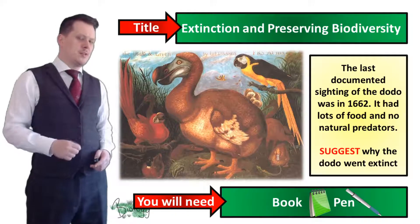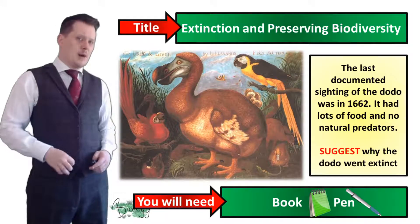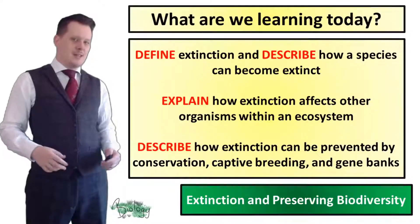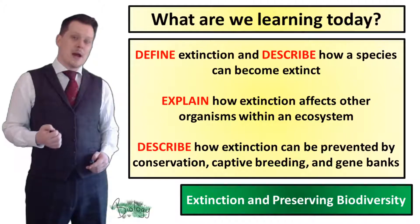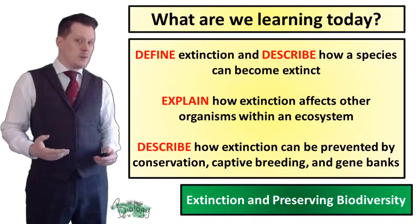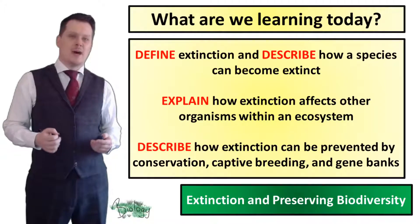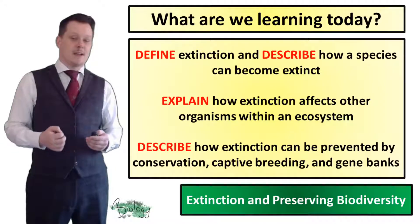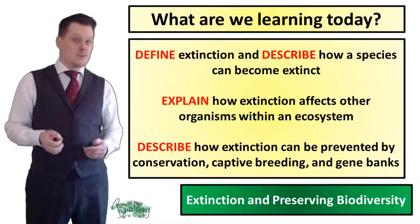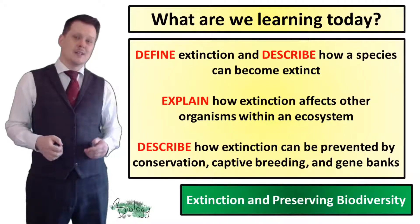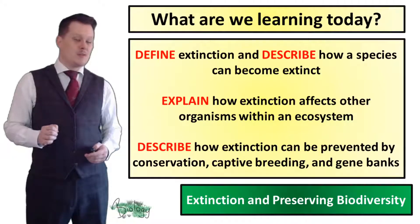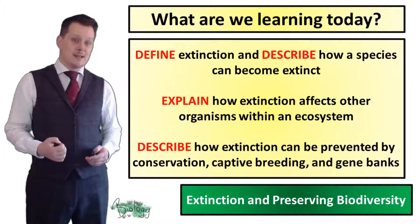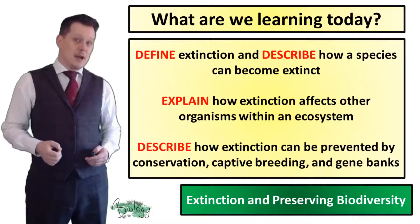Before we talk about the dodo, I want to talk about what we're going to look at today. We're going to define extinction and describe how a species can become extinct. We're going to explain how extinction affects other organisms within the ecosystem, and describe how extinction can be prevented by conservation, captive breeding, and gene banks.